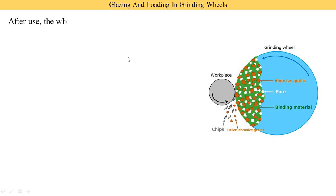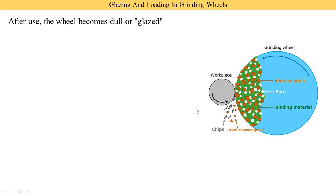What is glazing? After use, the grinding wheel becomes dull or glass-like. In this image you can see the grinding wheel consists of abrasive grains shown in orange color, and these abrasive grains are held together by a binding material shown in green color. There is also air space shown in white color. When we perform operations on the workpiece, chips are removed from the workpiece — that is called material removal.